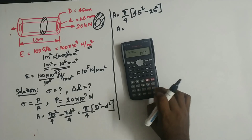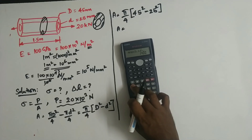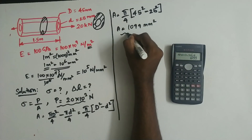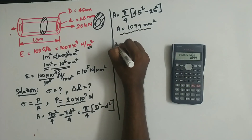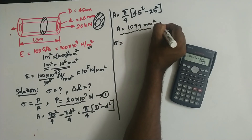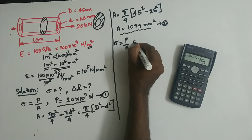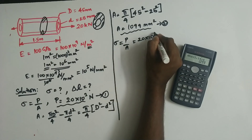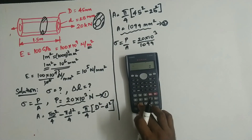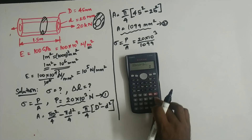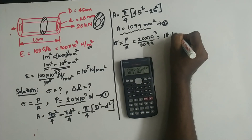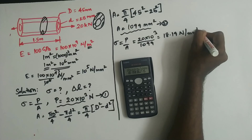Calculating: 45 squared minus 25 squared, multiplied by 3.14 divided by 4, gives an area of 1099 mm squared. Stress equals load divided by area: 20 into 10 power 3 divided by 1099, so stress equals 18.19 newton per mm squared.